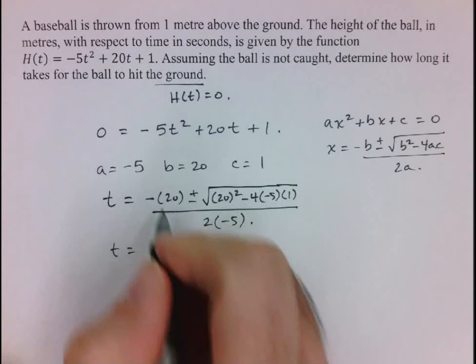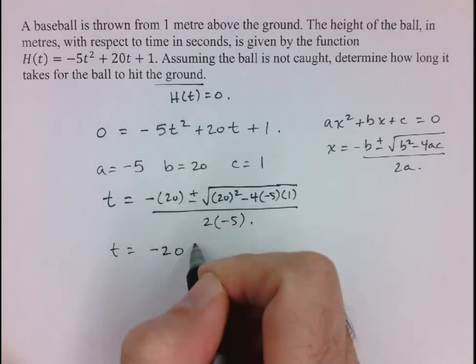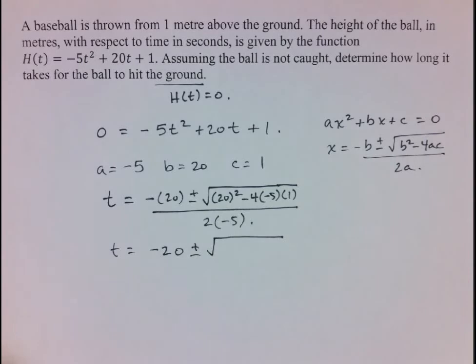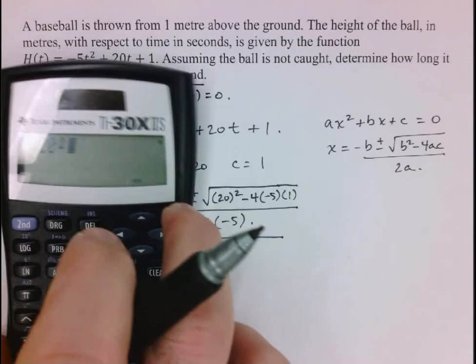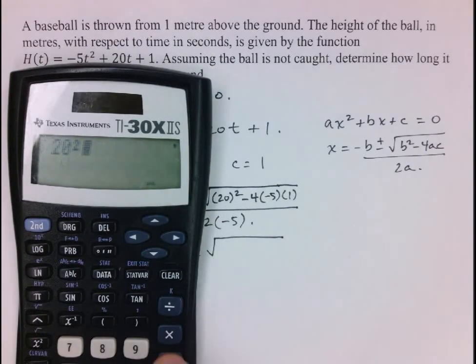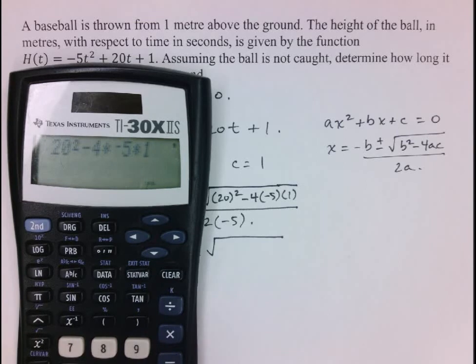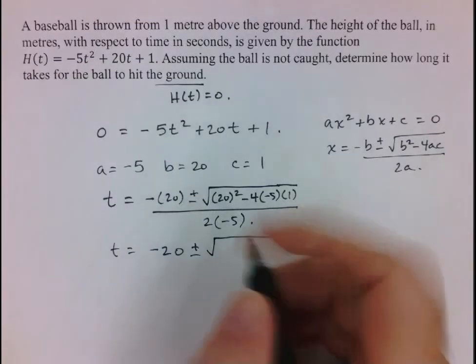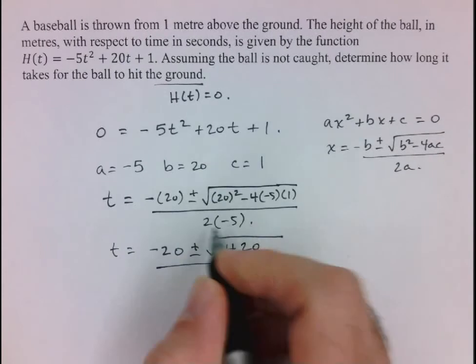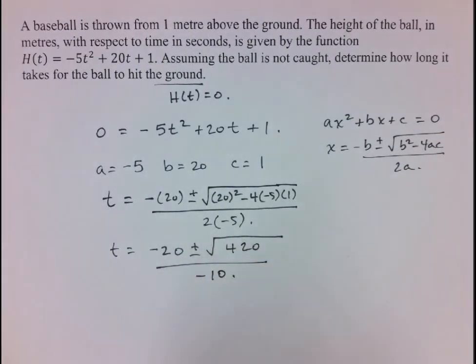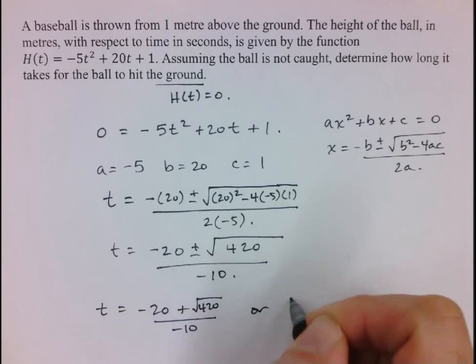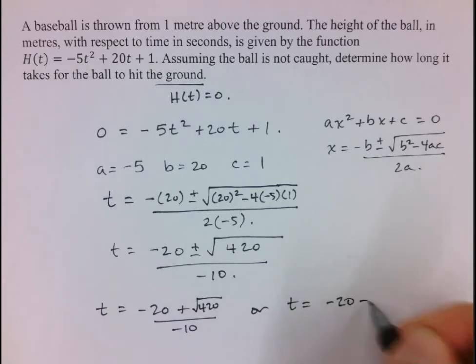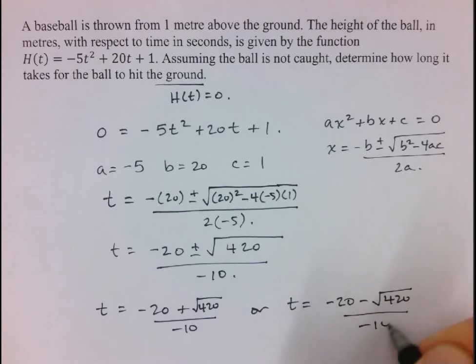So let's now start simplifying. So here we have negative 20 plus or minus, and in the square root, so I can calculate this here. So I've got 20 squared, let's put that so you can see it, 20 squared minus 4 times negative 5 times 1 is equal to 420. So square root of 420 all over 2 times negative 5 is negative 10. So that means t can either be equal to (-20 + √420) / -10, or t can be equal to (-20 - √420) / -10.